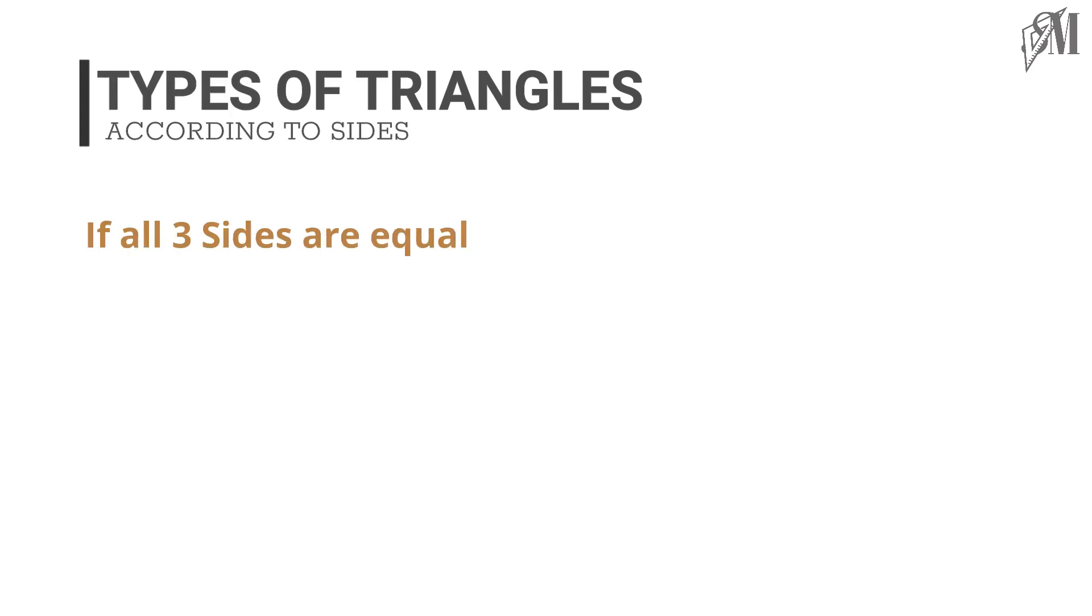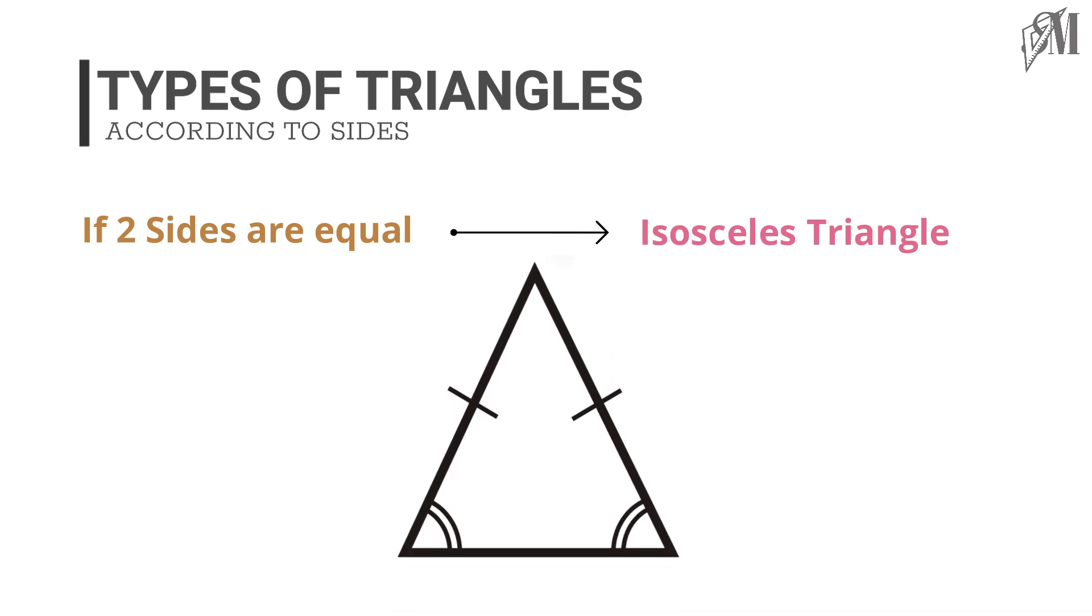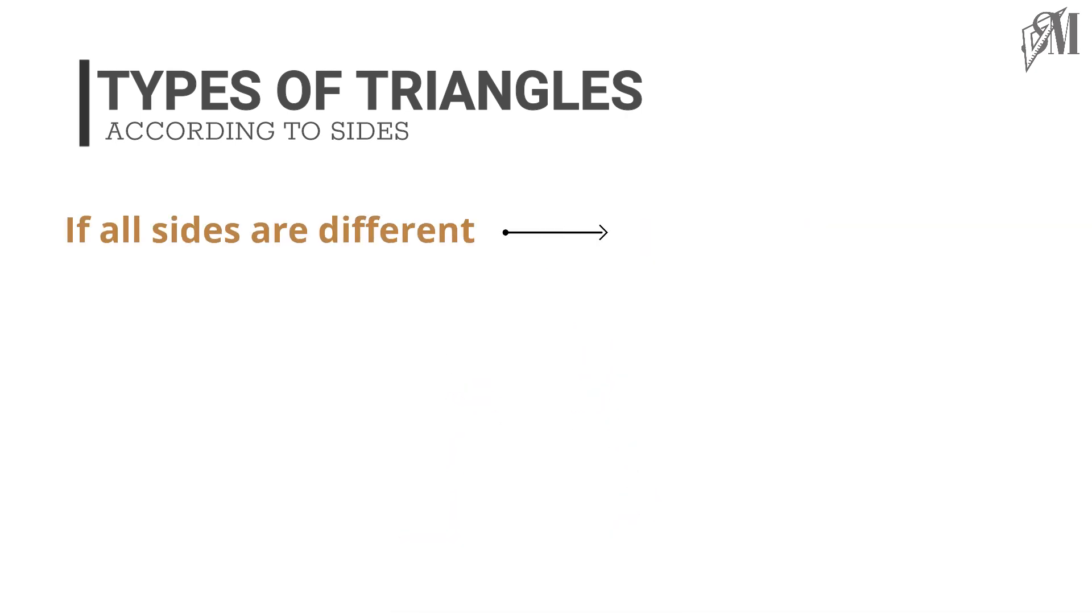According to sides, if all the sides are equal it is an equilateral triangle. If only two sides are equal it becomes an isosceles triangle. And if none of the sides are equal to one another we call it a scalene triangle.